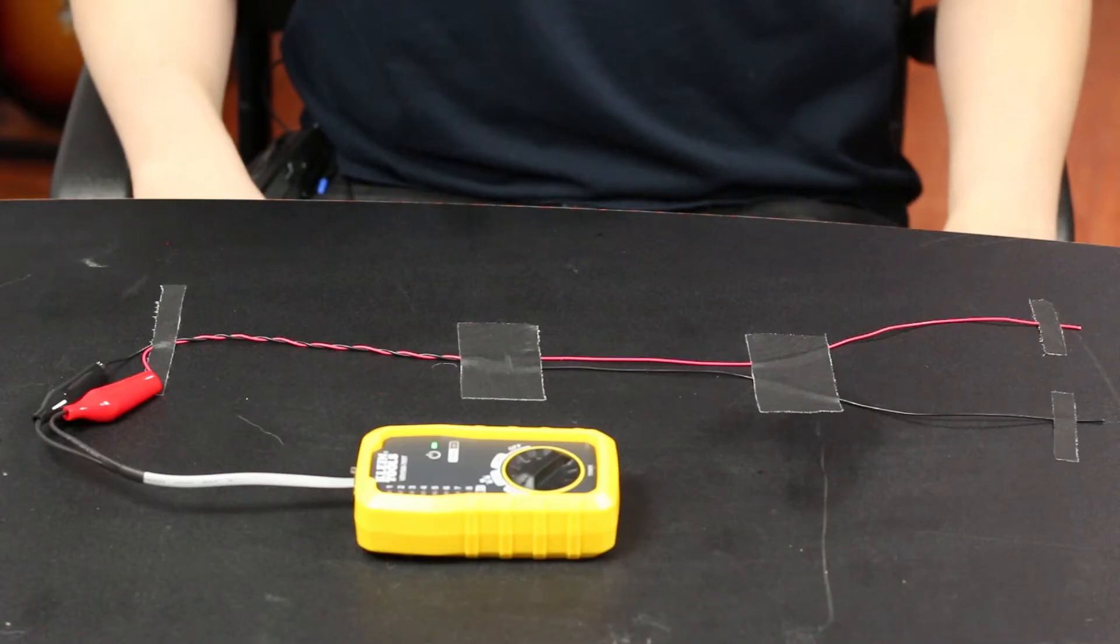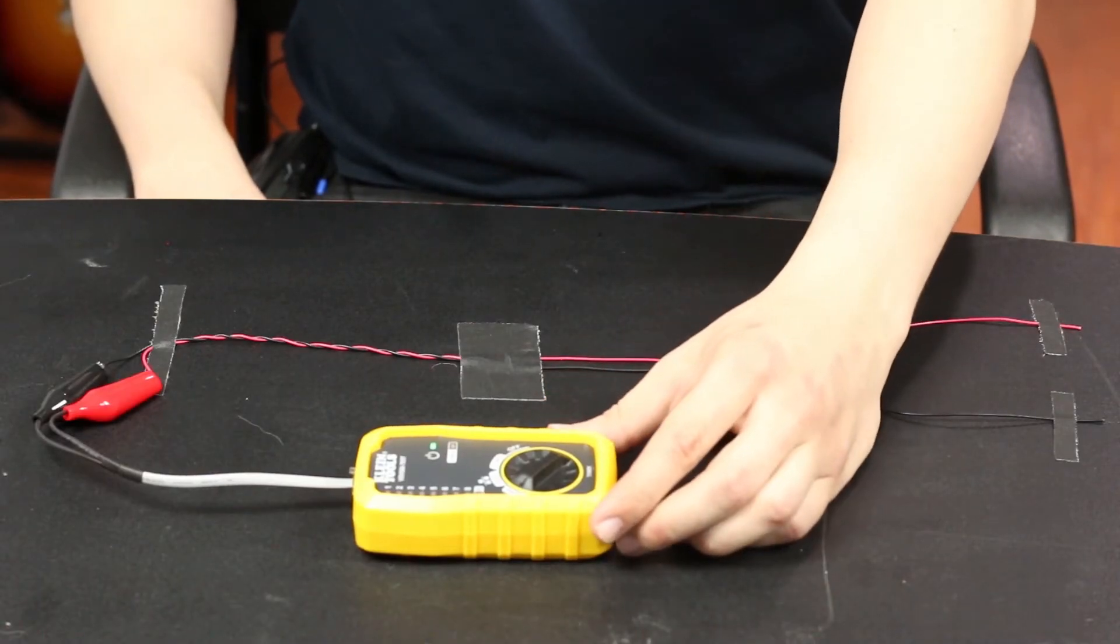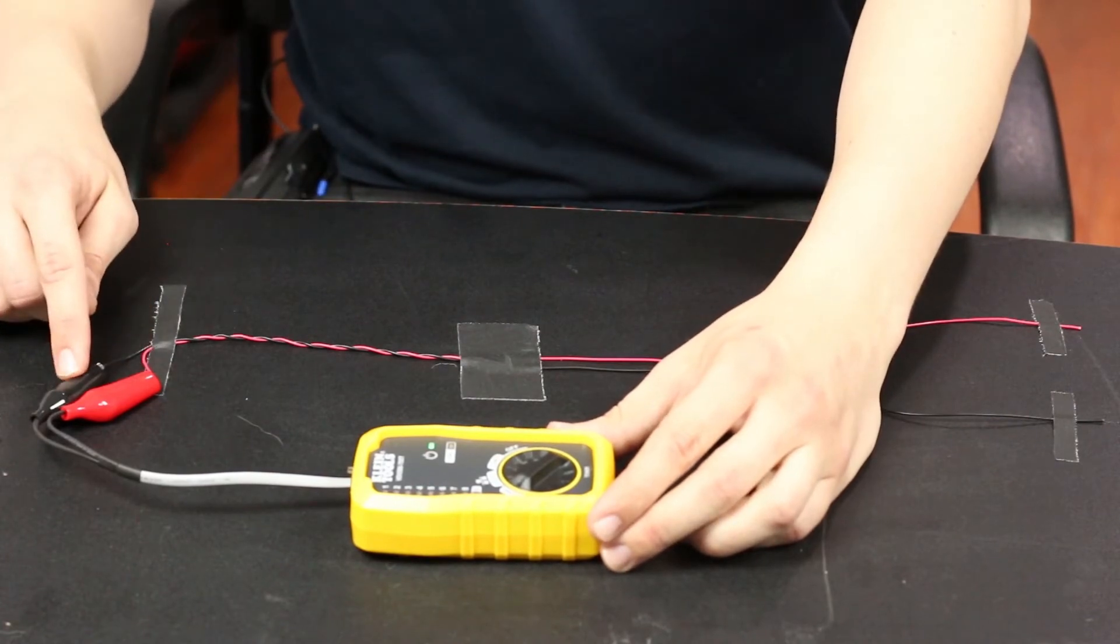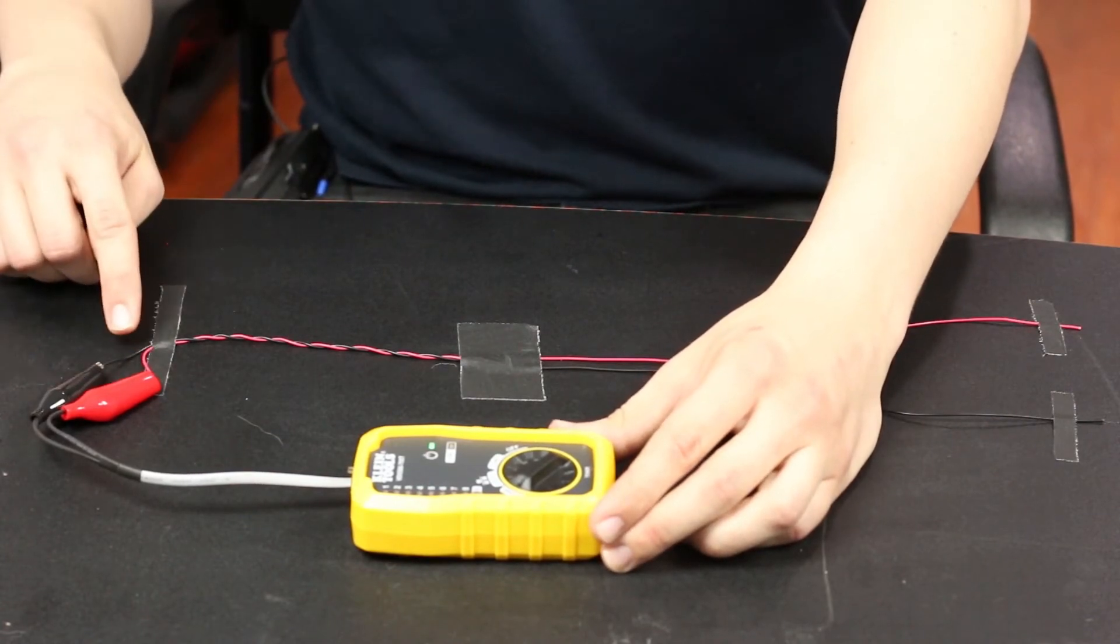I've created this experiment to help you visualize and hear the difference between a twisted pair and an untwisted pair. For this experiment, we'll use a signal generator, which puts an equal but opposite polarity signal on the red and the black wire.